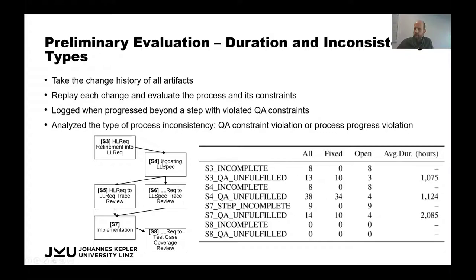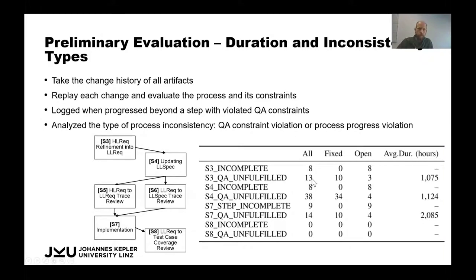Looking at six steps, S5 and S6 from the low-level refinement aspect were not investigated because no constraints were defined for them. We looked only at S3, S4, S7, and S8, and examined how many of the 109 instances had step S3 marked incomplete, how many had quality assurance constraints unfulfilled in that step, which ones were fixed, which were still open at the end, and how long fixed constraints stayed in an inconsistent state.